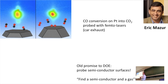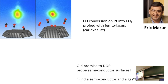Every car contains a platinum catalyst. One of the things it does is convert CO into CO2. So he was studying the conversion of CO to CO2 on platinum using a femtosecond laser — fast laser spectroscopy on the surface. He did that for quite a while and was very happy with that. But he made a promise to somebody at the Department of Energy to look into semiconductors.